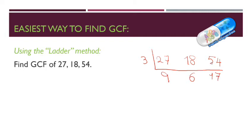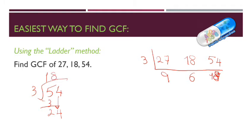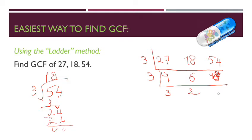If you can't divide easily, you can make a long division. 54 divided by 3: 5 divided by 3 is 1 remainder 2, bring down the 4 to get 24, and 24 divided by 3 is 8. So 54 divided by 3 is 18. Now make another L. We have 9, 6, and 18. These 3 numbers can all be divided by 3 again. 9 divided by 3 is 3, 6 divided by 3 is 2, and 18 divided by 3 is 6.